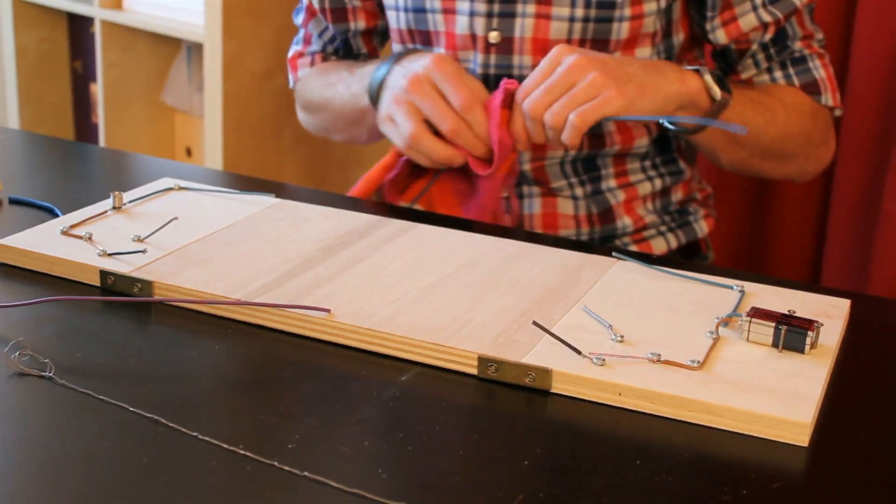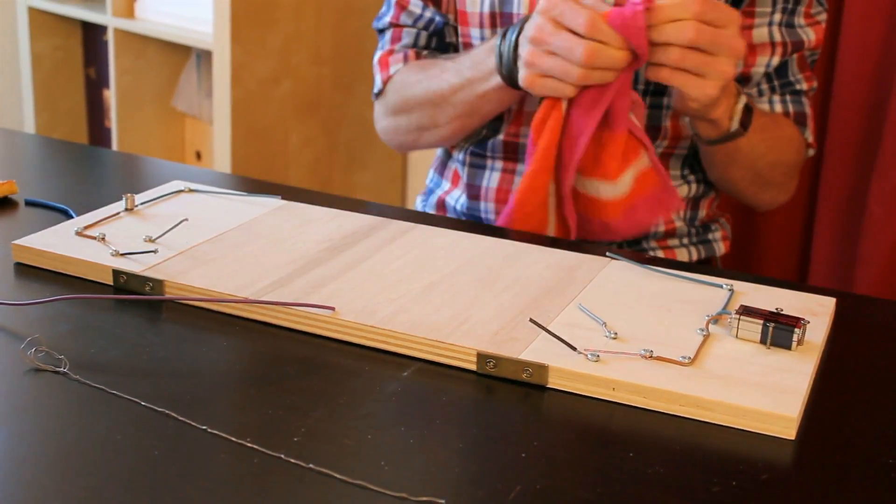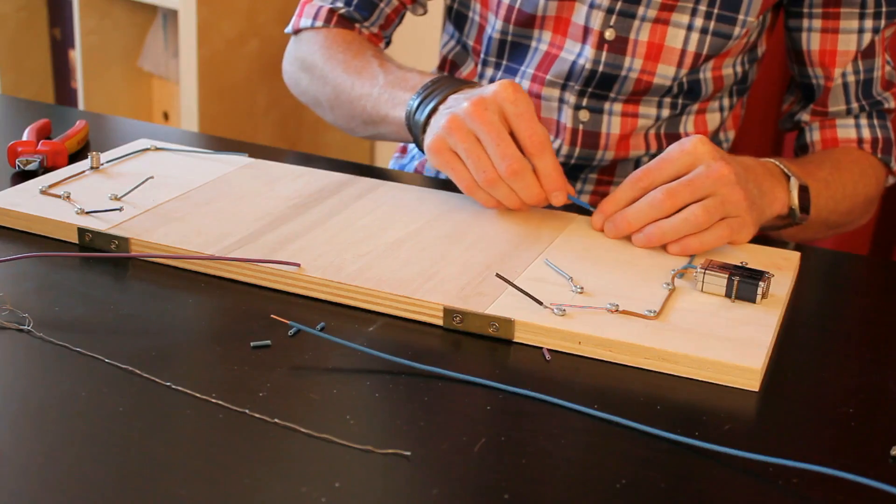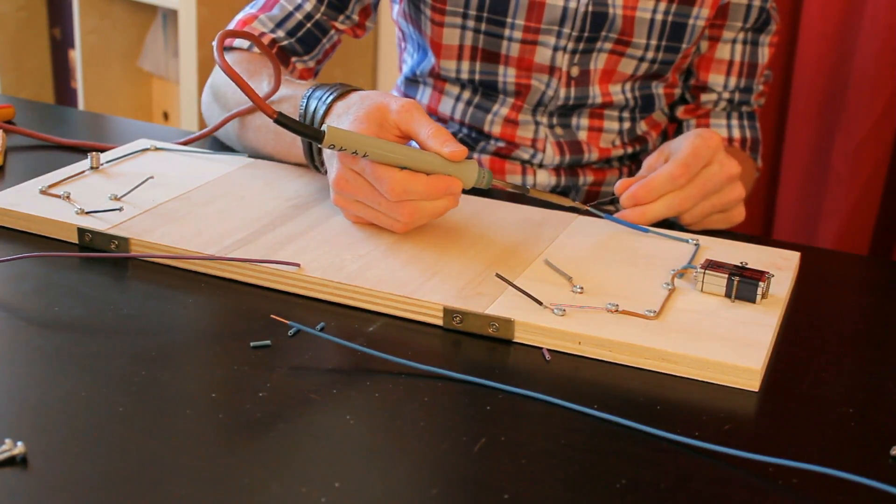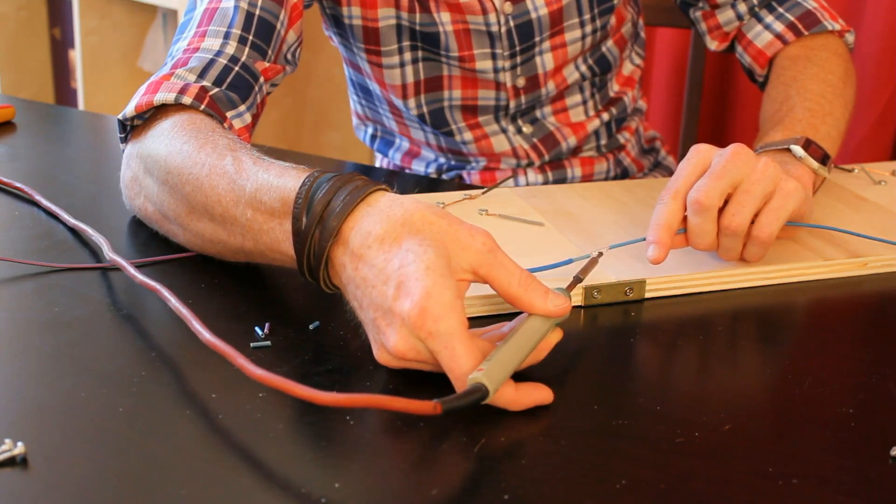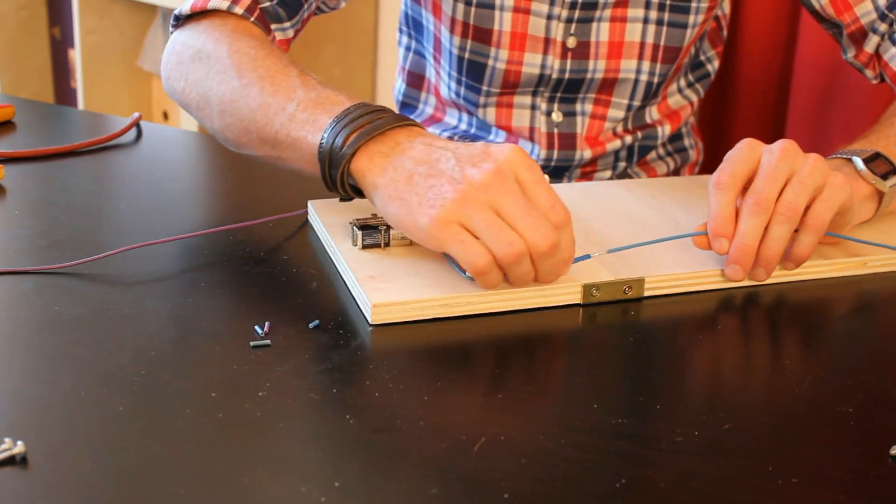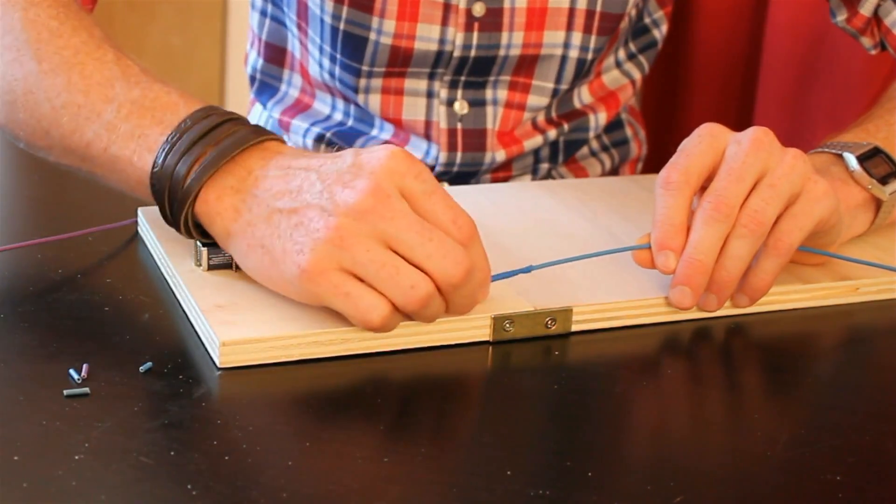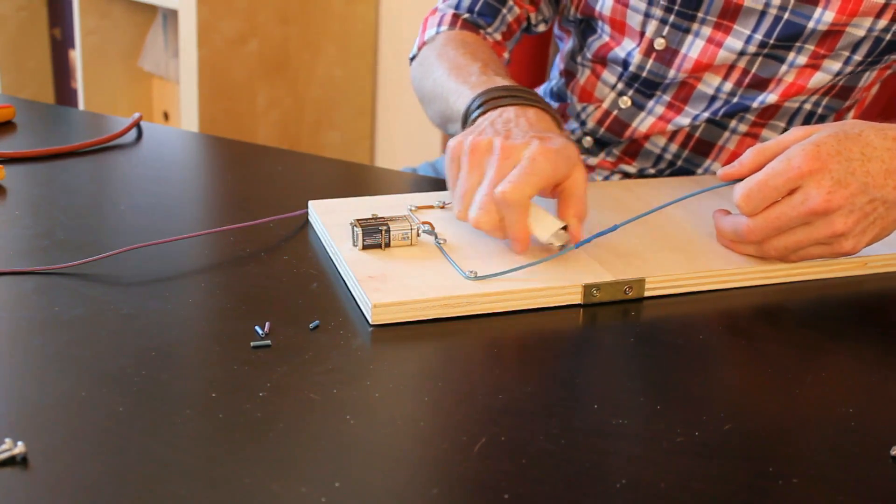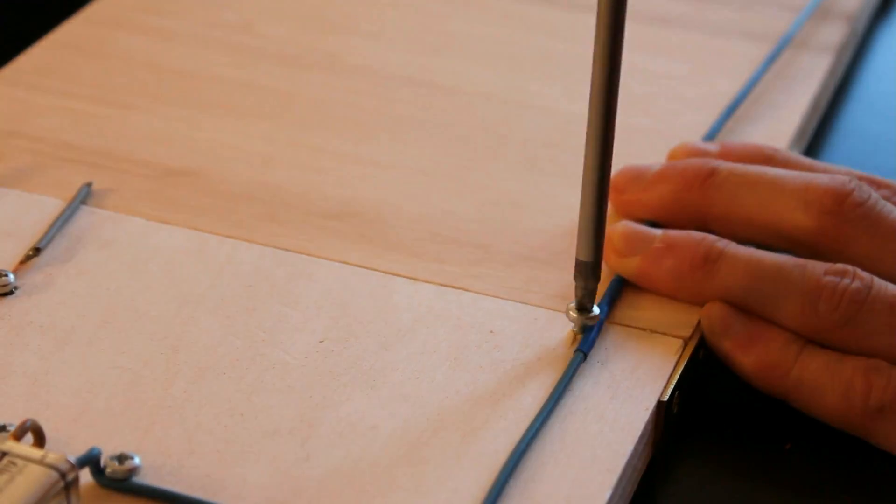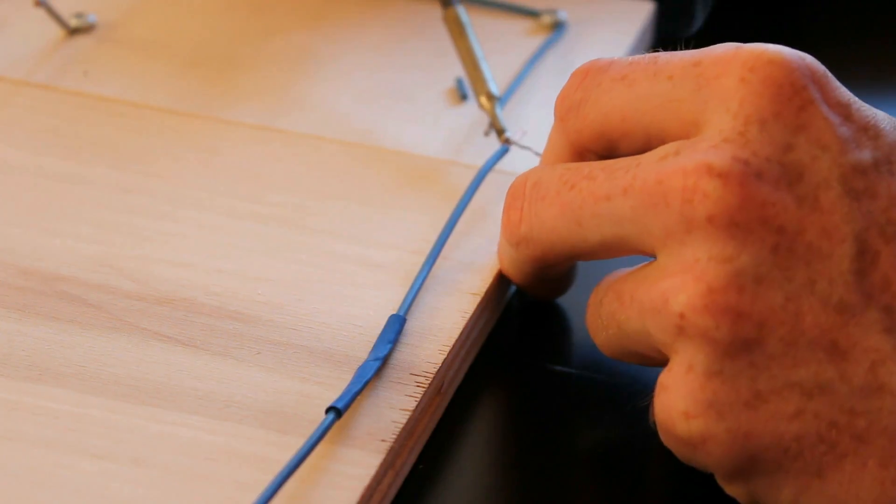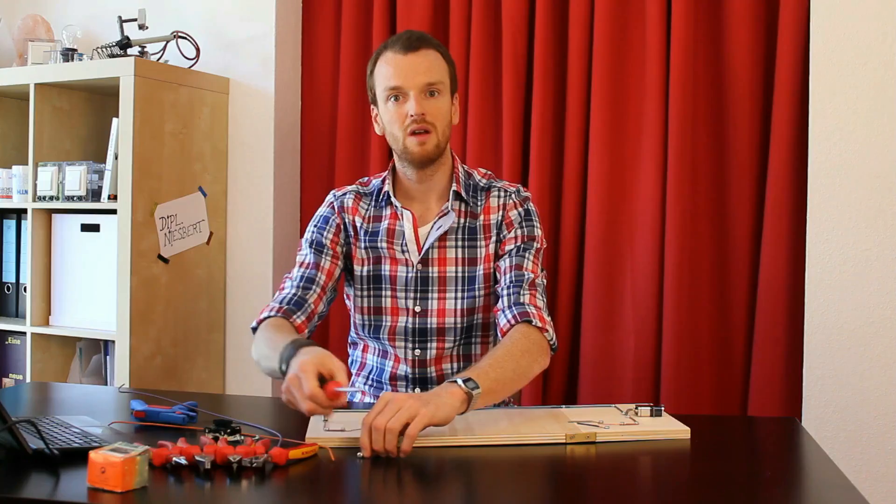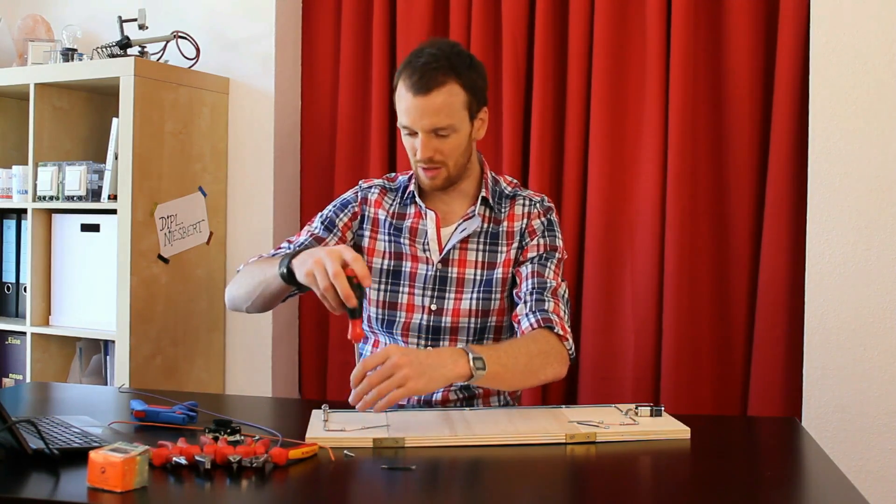Als nächstes kann die blaue Leitung hier unten schon zusammengeflickt werden. Hier oben bereite ich schon mal neue Leitungen vor.